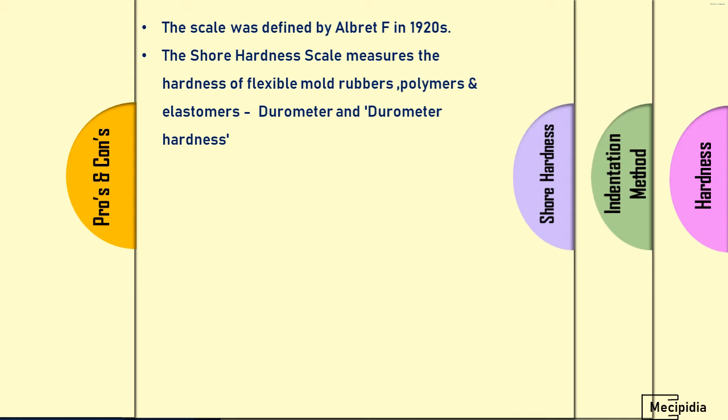The Shore hardness scale was defined by Albert F. Shore in the 1920s. This Shore hardness scale measures the hardness of flexible mold rubbers, polymers, and elastomers. Basically, this scale is used for rubber and polymers. One more name for this hardness is durometer hardness.